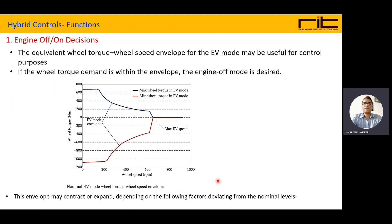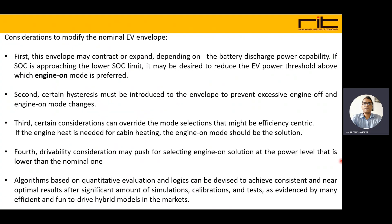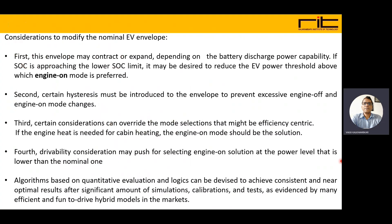This envelope may contract or expand depending on various conditions, that is deviation from the nominal level as shown in the graph. The envelope may be modified when the battery discharge power capability changes. If SOC is approaching the lower SOC limit, it may be desired to reduce the EV power threshold above which engine mode is preferred. So if the battery SOC is approaching a lower level, engine-on mode will be prepared above the envelope.